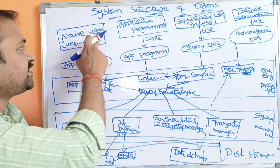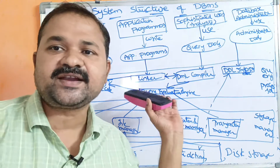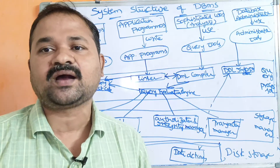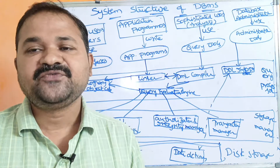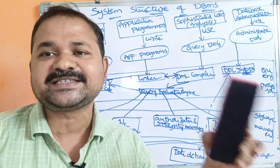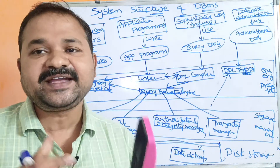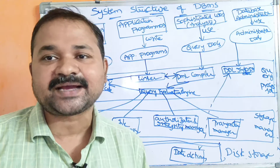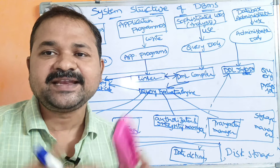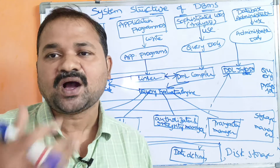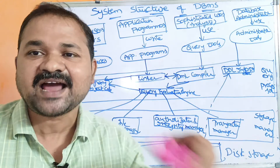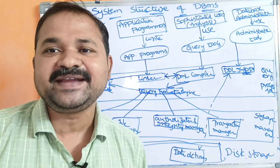Now let us see about the first one: naive users. Naive users are nothing but web users. If you take the example of Google Pay or Phone Pay, we use the application but we don't know how it is actually implemented. If you take the example of a bank, the cash counter employees are nothing but naive users, because they don't know how it is internally implemented — they simply use the application interface, that graphical user interface.